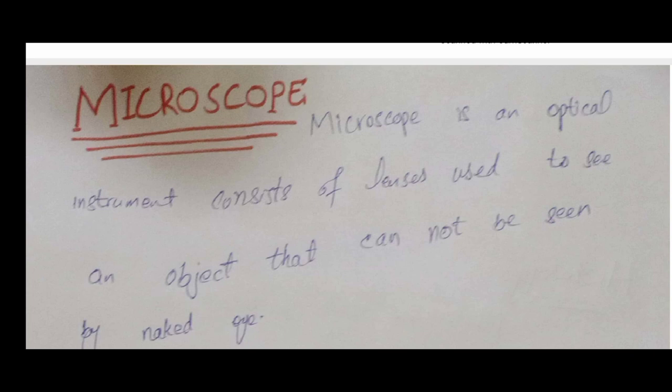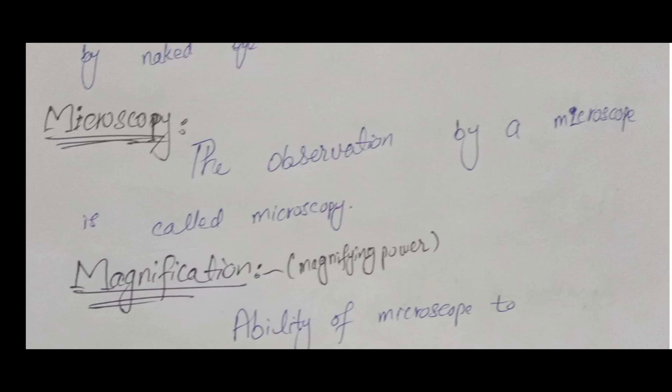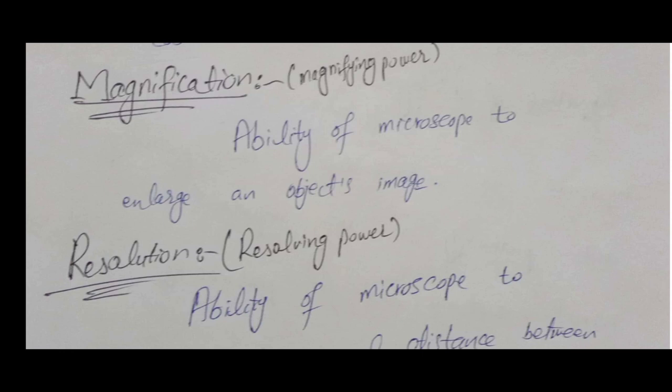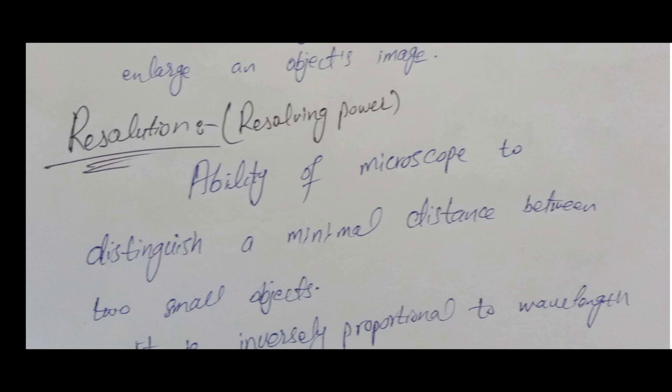What is microscopy? Basically, microscopy is the observation that we can make via microscope. There are two key abilities of a microscope: first is magnification — the ability of the microscope to enlarge an image of a very small object — and second is resolution, or resolving power, which is the ability of the microscope to distinguish or separate a very small distance between two very small objects.